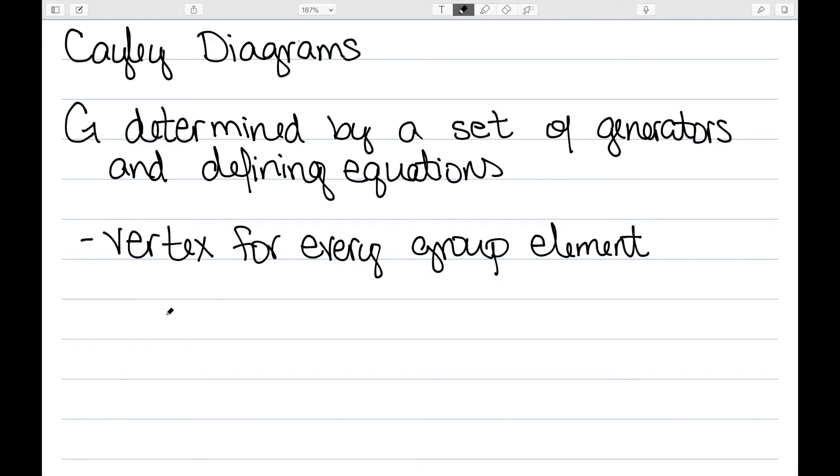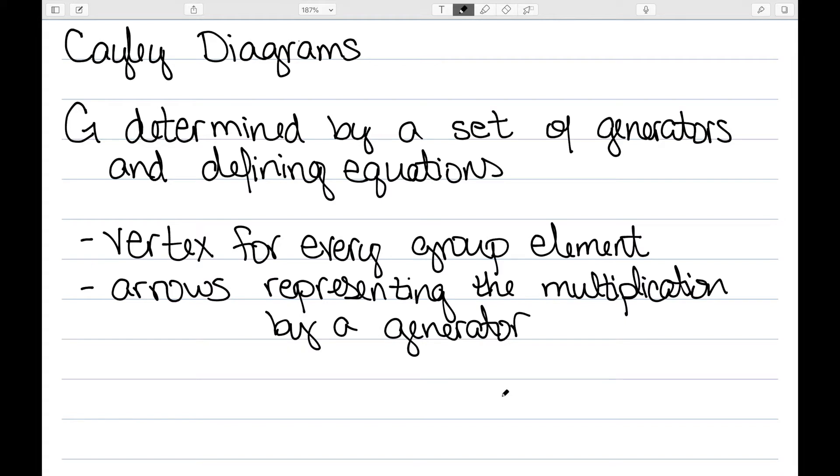In a Cayley diagram, there's a vertex for every group element. And there are arrows representing the multiplication by a generator or addition if you're in an additive group.